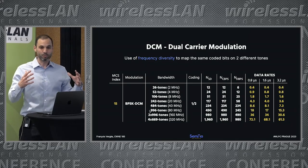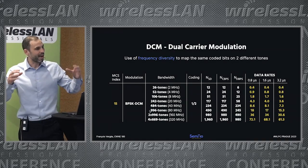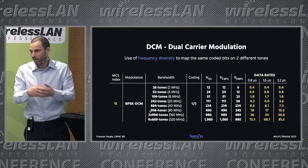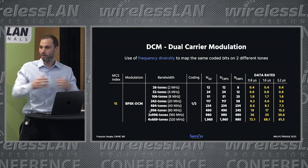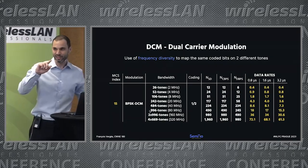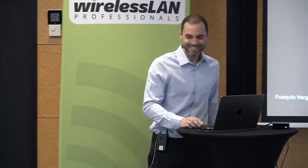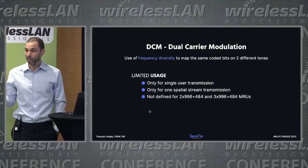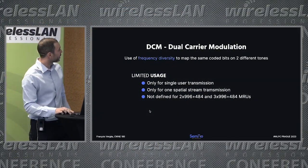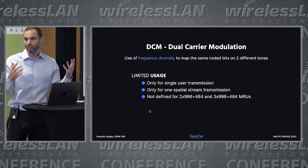The idea behind MCS 15, as far as I understand, is more for a single-AP deployment where you want to extend the cell edge for IoT devices that don't need a lot of bandwidth. You could use this modulation to place a sensor in your garage and get some data out of it. It has a couple of limitations: it's only for one spatial stream, and it's only single-user — which makes sense for the use case.